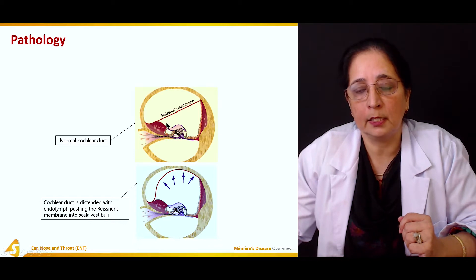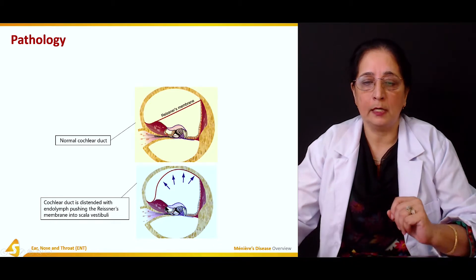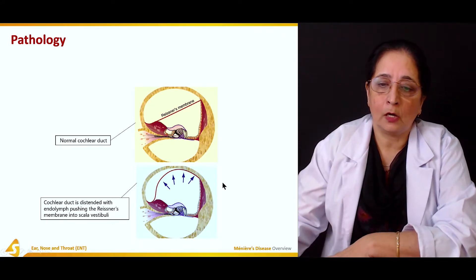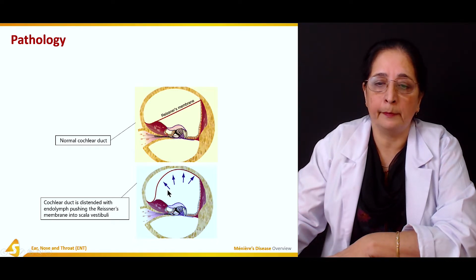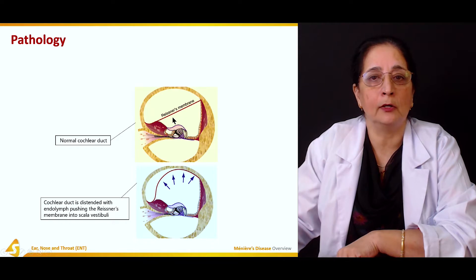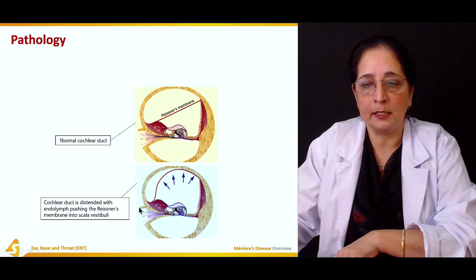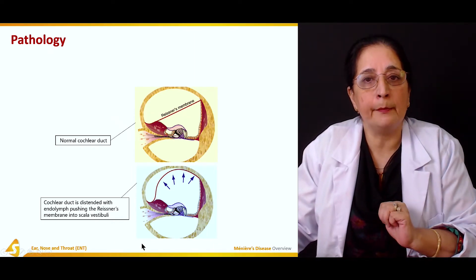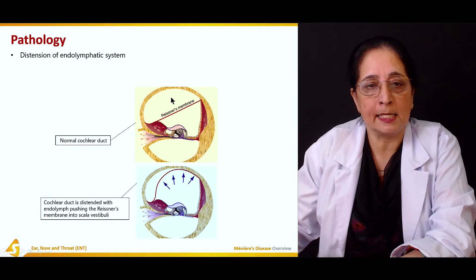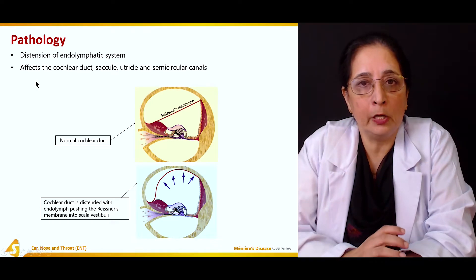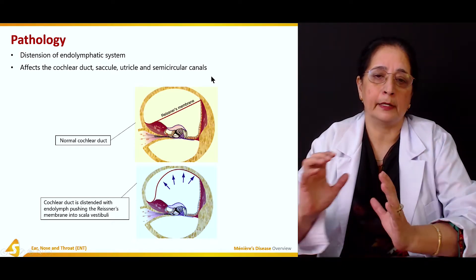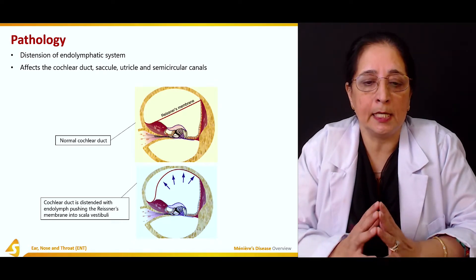The cochlear duct carries the fluid and has a Reissner's membrane. When the cochlear duct becomes distended, it causes pushing of the Reissner's membrane into the scala vestibuli. This is the internal structure of the cochlear duct — normal versus distended. The distension of the endolymphatic system affects the cochlear duct, saccule, utricle, and semicircular canals — all are affected by the increase in endolymph.